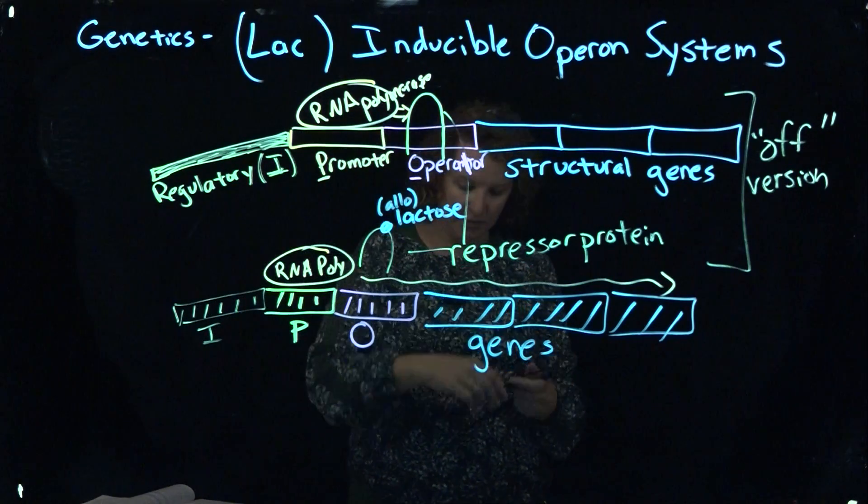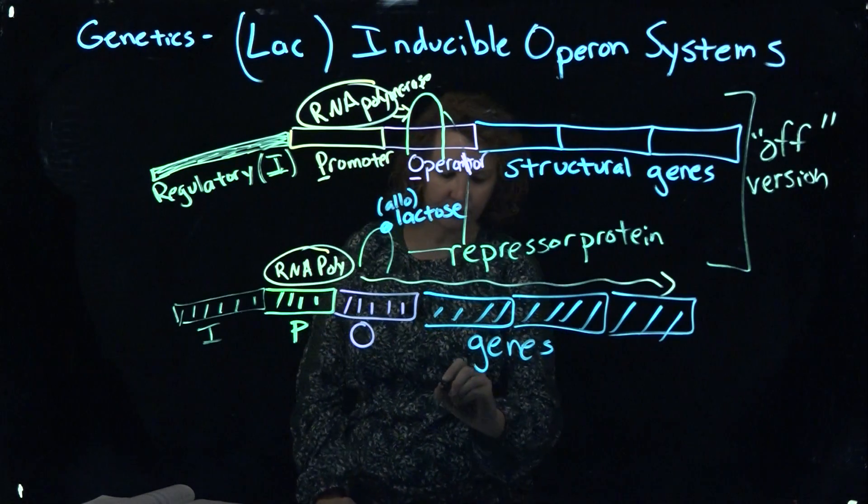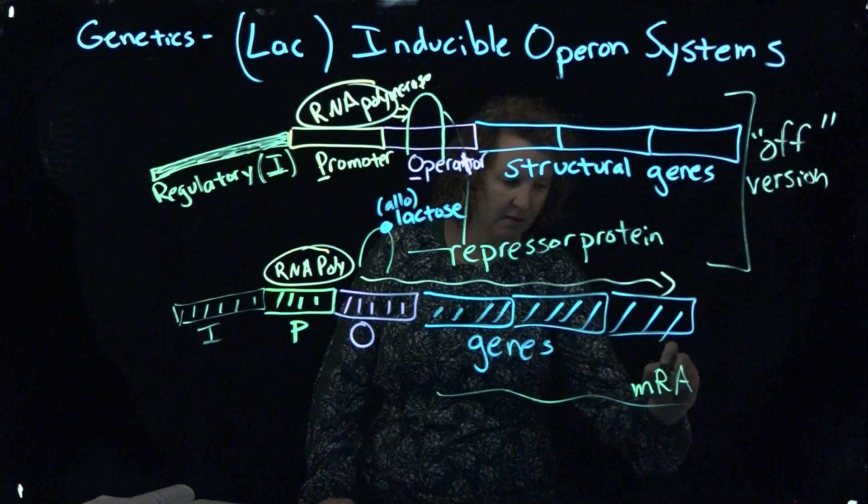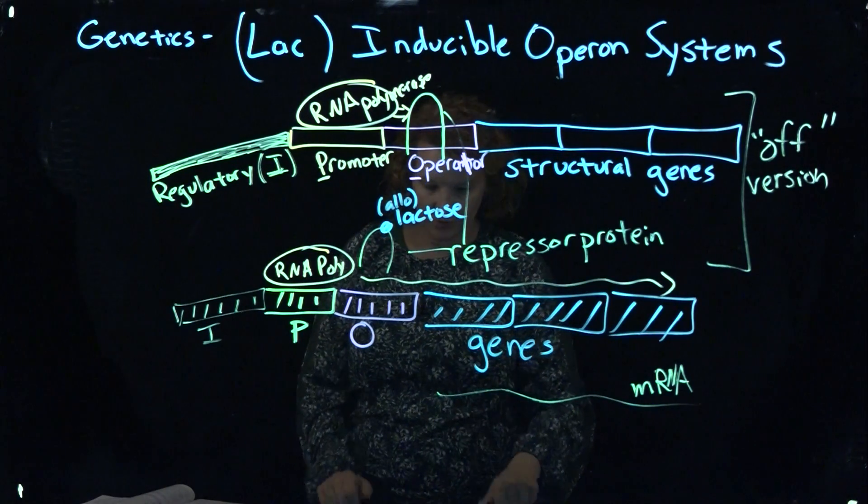So what will happen is RNA polymerase will move along here. You'll make your mRNA. And then you'll make your proteins.